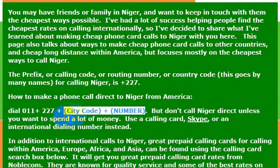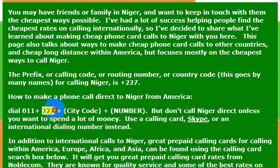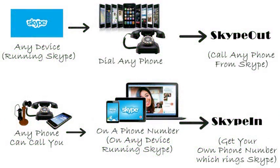Again, the dialing code for the country is 227. But I wouldn't really recommend calling direct — your phone company will charge you a lot of money.